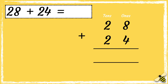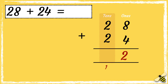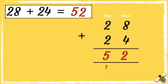So now our column addition is set up and we can add the digits in each column. 8 add 4 equals 12, we carry the 10 below in the tens column. Not forgetting about the 10 that we carried over: 2 add 2 add 1 equals 5. So we have 5 tens and 2 ones, so the answer is 52.